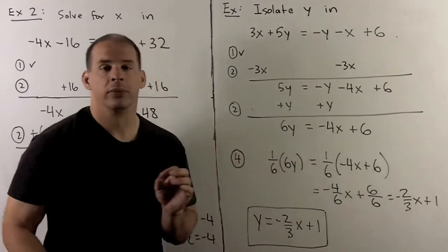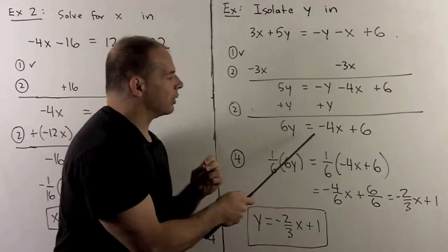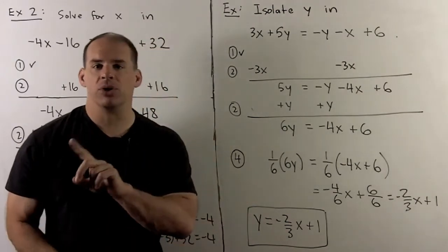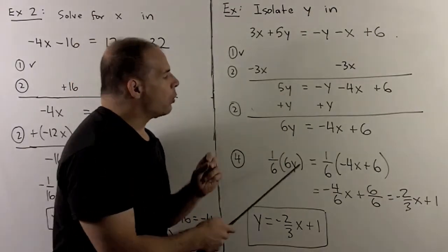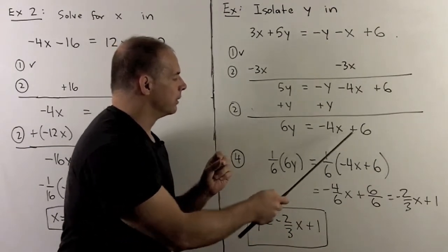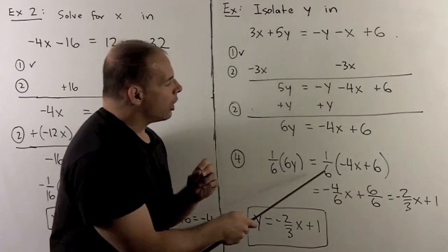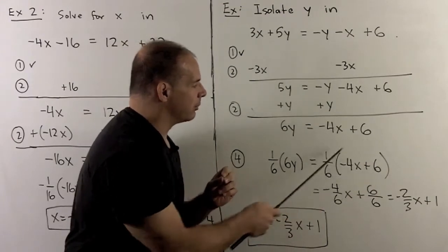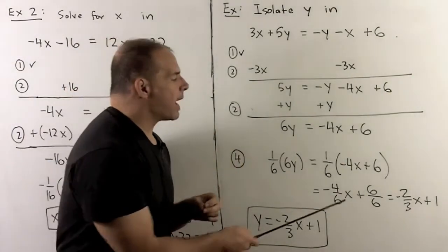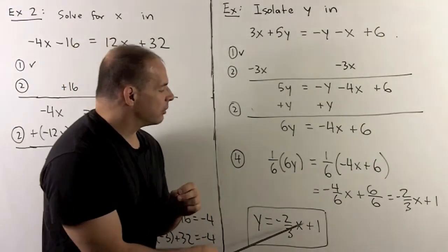All y terms are on one side, all non-y terms on the other — including the x term. To get rid of the 6, we multiply both sides by one-sixth, remembering to distribute. One-sixth times 6y equals y. On the other side, one-sixth times (-4x + 6) distributes to -4/6 x + 6/6, which simplifies to -2/3 x + 1. So we've isolated y: y = -2/3 x + 1.